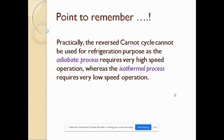One important point: even though the reverse Carnot cycle offers the highest coefficient of performance, it cannot be used for practical refrigeration purposes. This is because the adiabatic process requires very high-speed operation while the isothermal process requires very low-speed operation. Due to this conflict, it cannot be applied to normal day-to-day refrigeration, despite offering the highest efficiency.